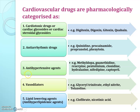Third, anti-hypertensive agents — examples are methyldopa, guanethidine, reserpine, pentolinium, clonidine, hydralazine, nifedipine, and captopril. Fourth, vasodilators — examples are glyceryl trinitrate, ethyl nitrite, and tolazoline. Fifth and last, lipid-lowering agents — examples are clofibrate and nicotinic acid.